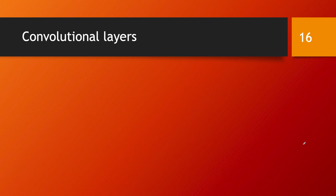Let's discuss setting up a convolutional layer in a deep neural network. To make clear what's the difference with respect to fully connected layers, I'm going to start by reminding you how a fully connected layer was doing its forward computation.